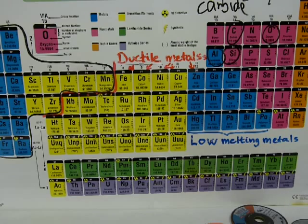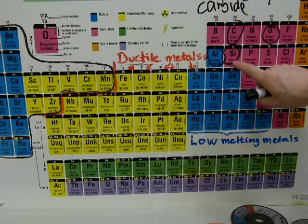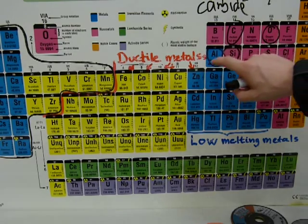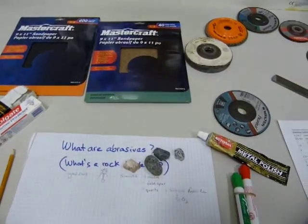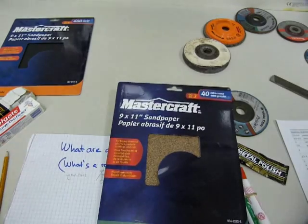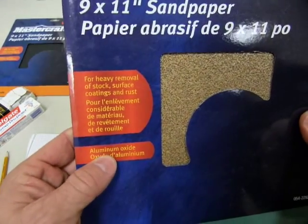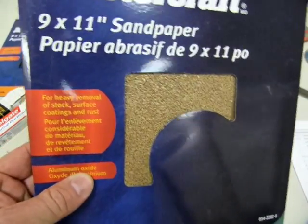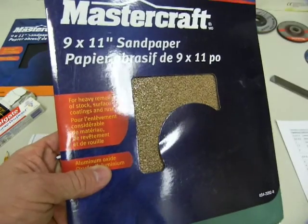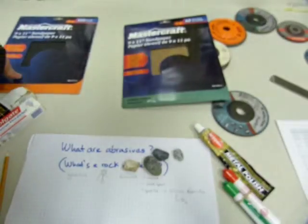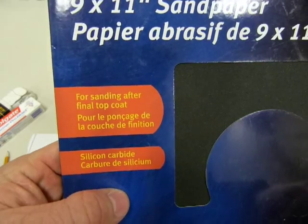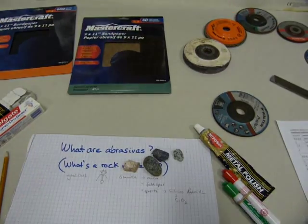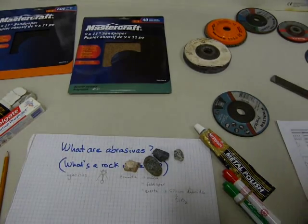Abrasives are made out of silicon oxide (quartz), aluminum oxide, silicon carbide, and combinations of these things — and you can most often see this printed on the packaging. Here it says 'coated abrasive' and 'aluminum oxide.' Aluminum oxide is a little harder than quartz — a little harder than silicon oxide — and it's a very good abrasive. This other one here is made out of silicon carbide.